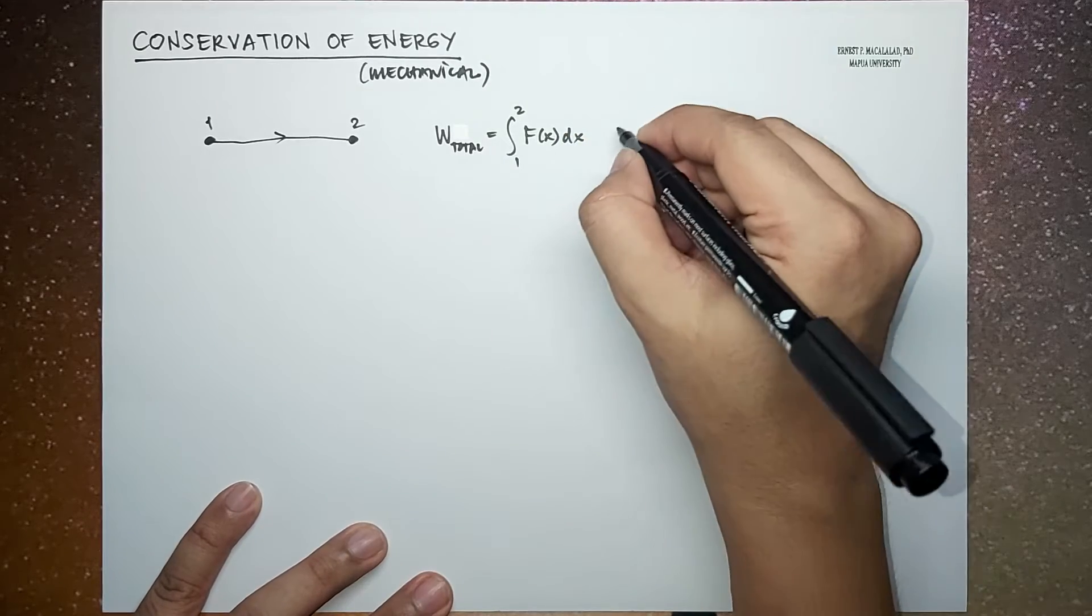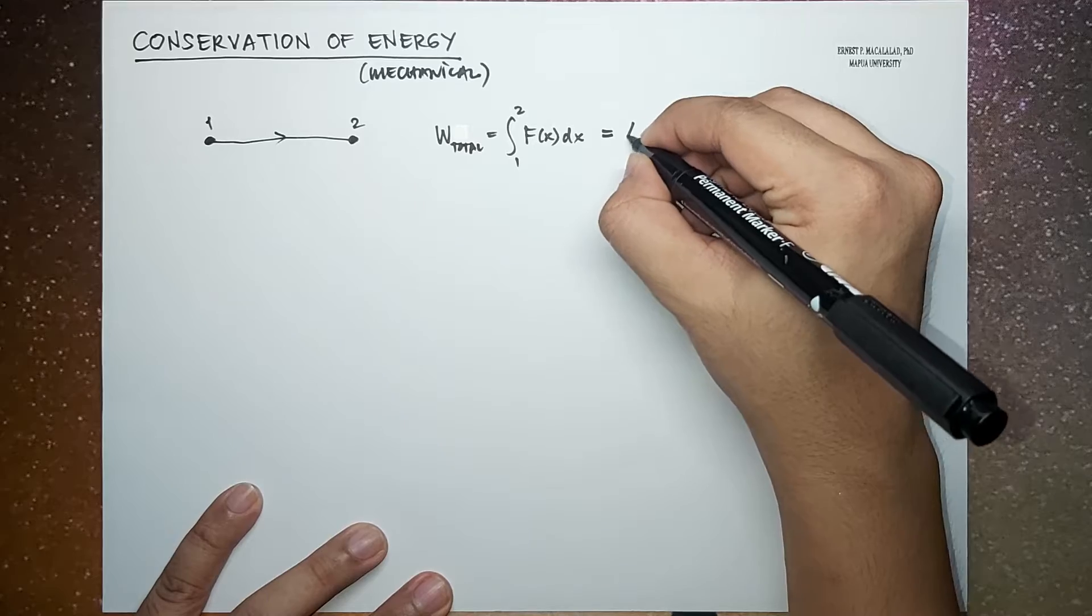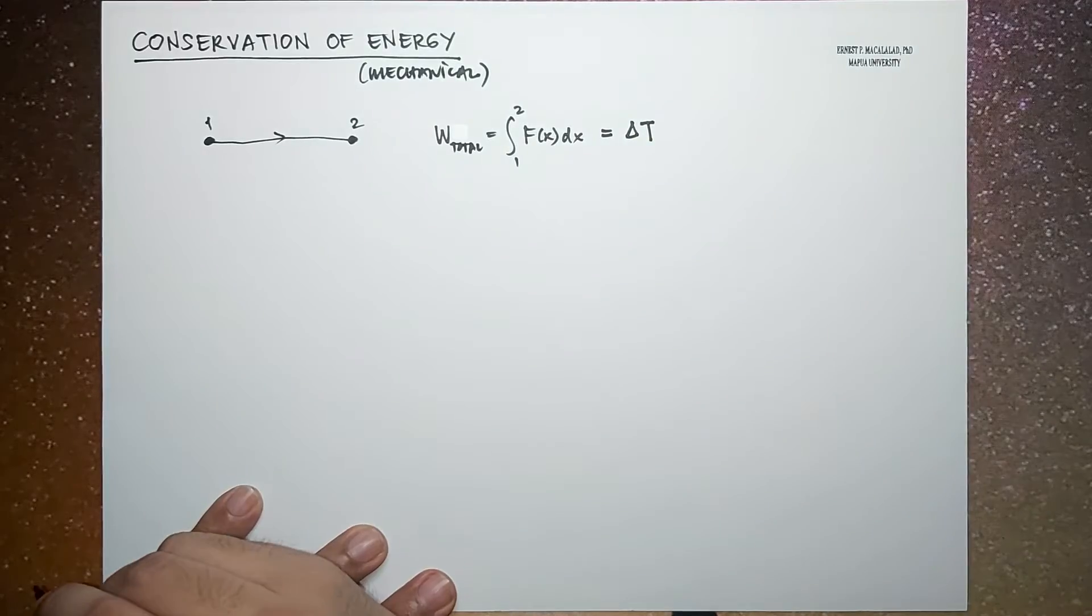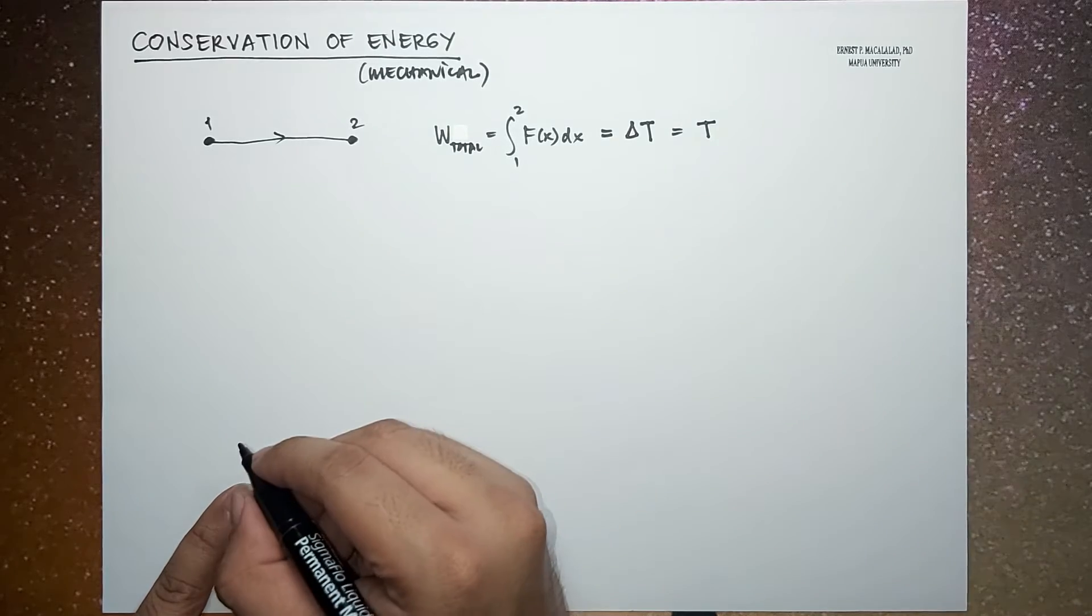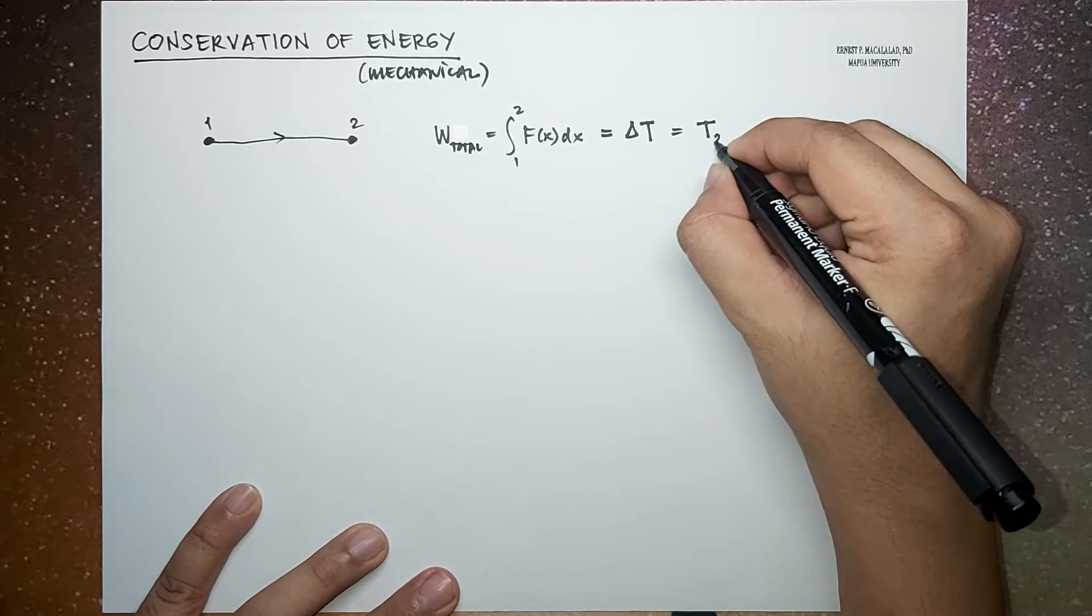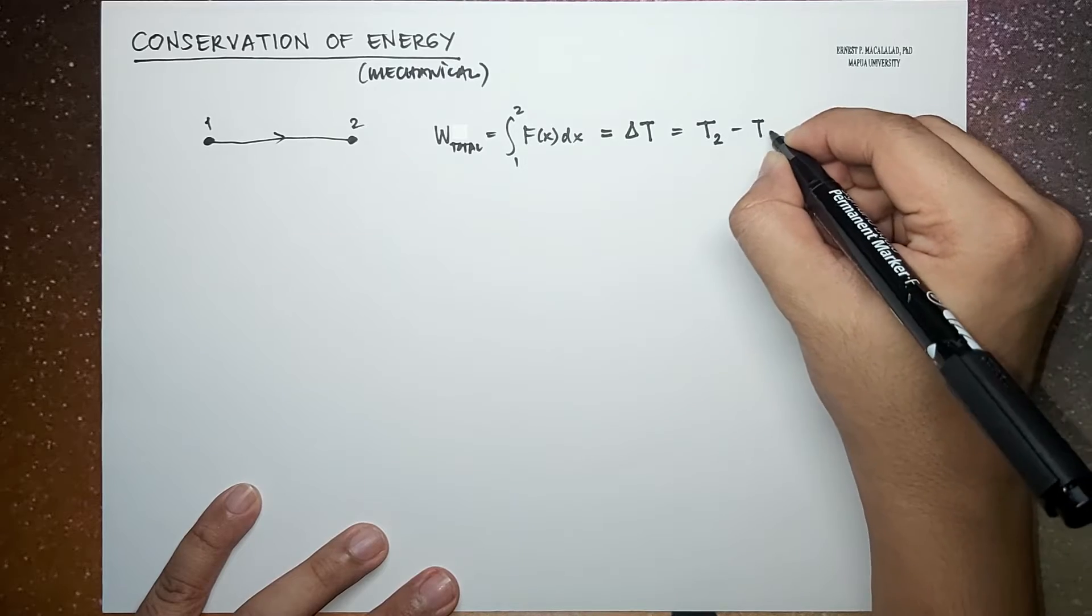And work-kinetic energy theorem says that this is equal to delta T, where T is your kinetic energy. So this is the difference between the final kinetic energy minus the kinetic energy initially.